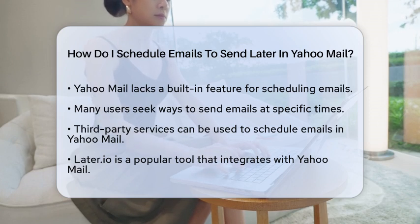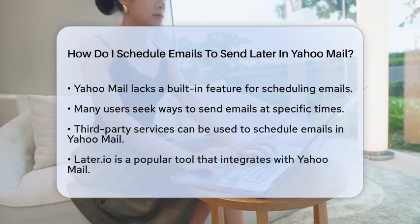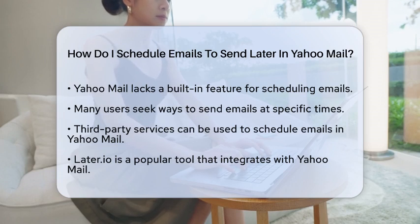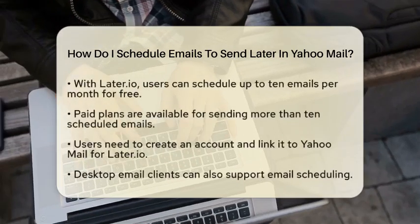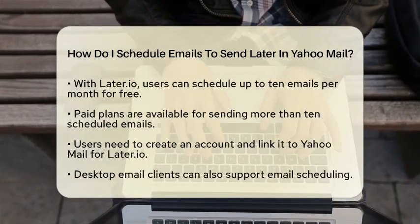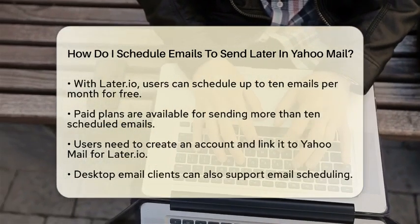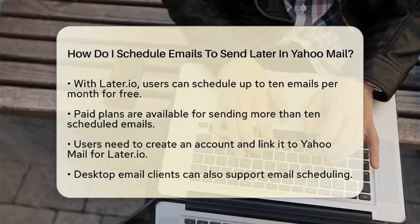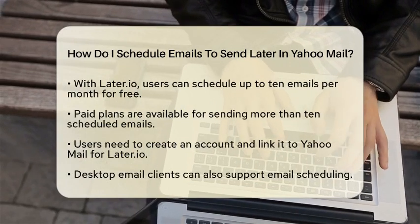First, consider using third-party services. One popular option is Laterio. This tool integrates with Yahoo Mail and allows you to compose your emails and schedule them to send at a chosen date and time. With Laterio, you can send up to 10 scheduled emails per month for free. If you need to send more, they offer paid plans as well.